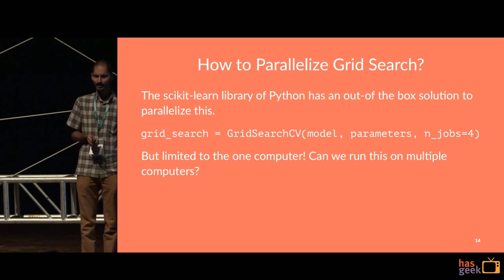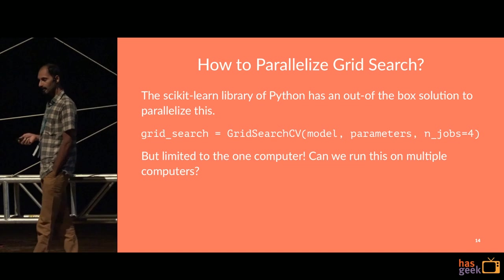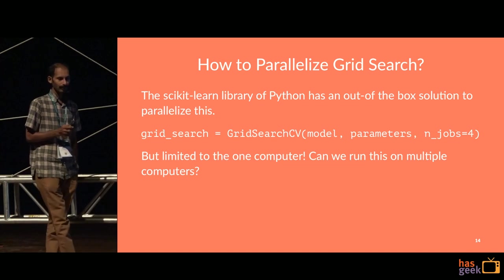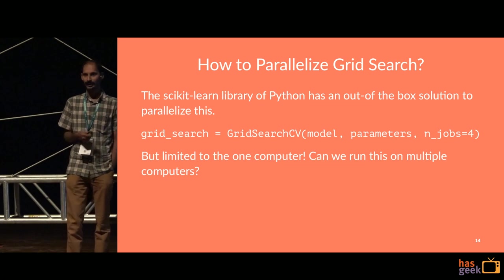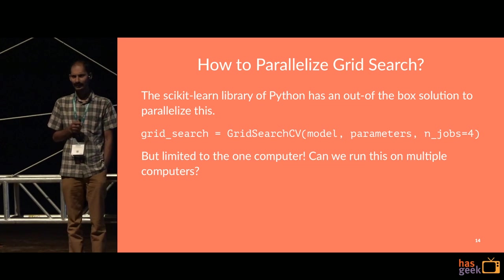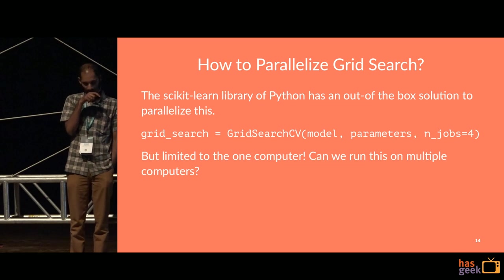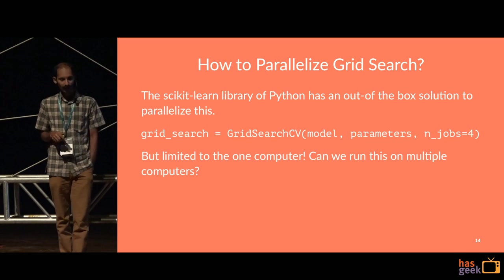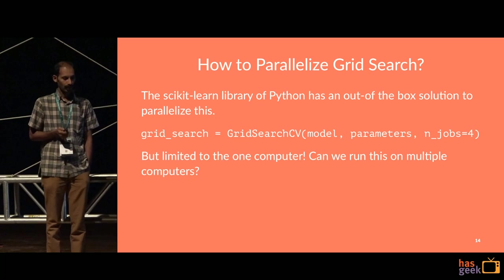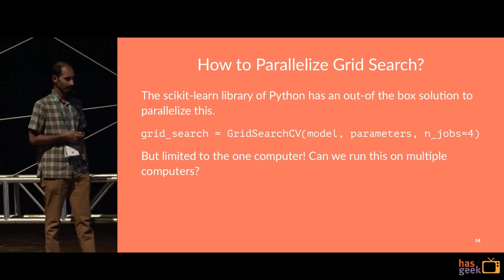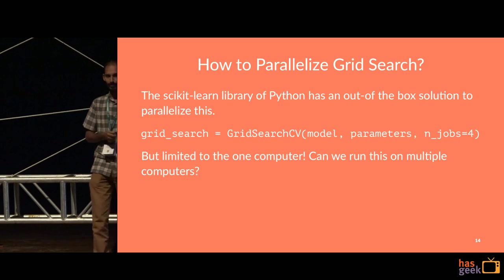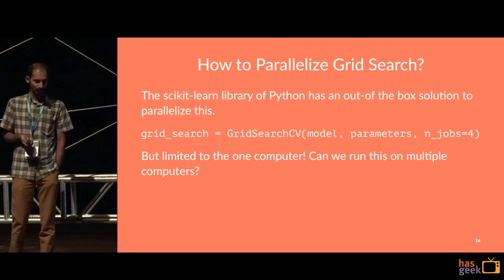You don't really have to do much to parallelize grid search because scikit-learn's grid search already has an n_jobs option — you specify how many workers you want to run, and it actually tries to parallelize that for you. But the limitation is you are limited by a single computer. If it has four cores, it has four cores, and if you really want to do even more, that doesn't really work.